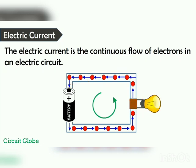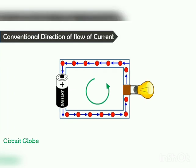The electric current is represented by the symbol I. It is measured in amperes, and ampere is equal to the charge flowing per second. Now, conventional direction of flow of current.